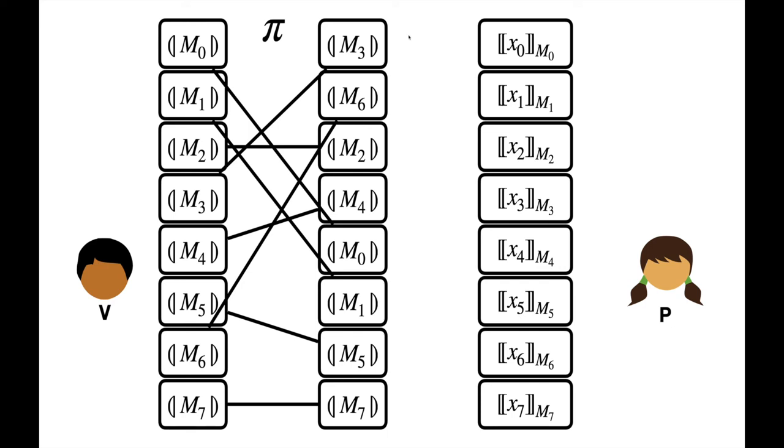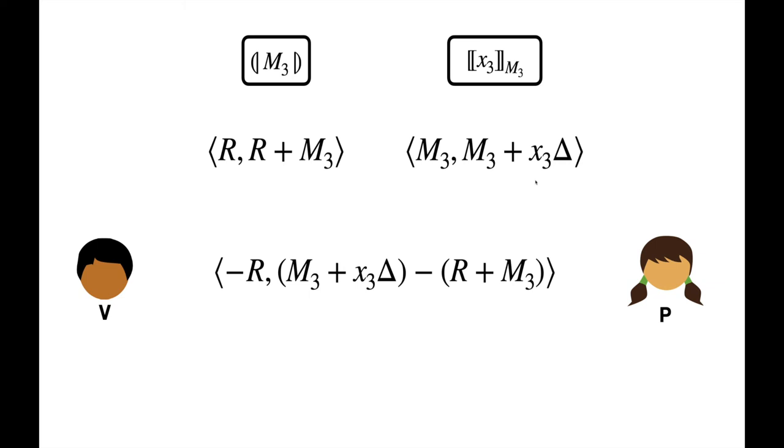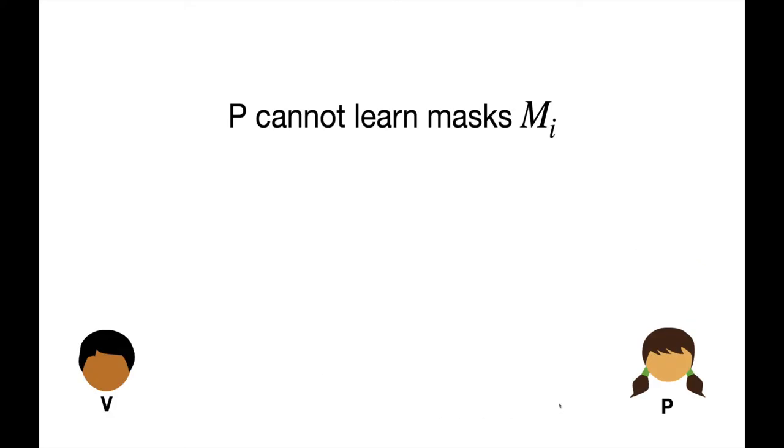Let's now look at how this permutation supports RAM accesses. Consider the first RAM access in this example, which will be to the index 3. The parties hold these two relevant sharings. If we unpack the definition of these two sharings, we can see that the parties have enough information to locally construct an authenticated sharing of the appropriate RAM value. Specifically, P subtracts her share of the encoded mask from her share of the encoded RAM value. Meanwhile, the verifier chooses as its input negative r. Some simple arithmetic demonstrates that this is a valid sharing of the appropriate RAM value x3. Notice that this has solved our original problem. The parties have managed to agree on a specific mask negative r without leaking a mask to the prover. Thus, we have solved this first problem by incorporating two different types of sharings in the same circuit.